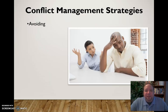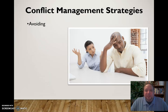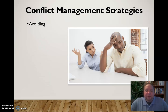The first strategy is avoiding, which is probably the least effective because you're doing exactly what it says — avoiding the issue, which usually also means avoiding the other person. So your relationship tends to suffer. This is a lose-lose conflict management strategy because neither party is getting what they want. Nobody's achieving their goal, and you have the potential of losing the relationship as well.